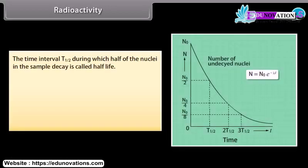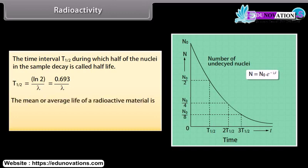Radioactivity — half-life: The time interval T½ during which half of the nuclei in the sample decay is called the half-life. T½ = ln2 / λ = 0.693 / λ. The mean or average life of a radioactive material is τ = 1 / λ.